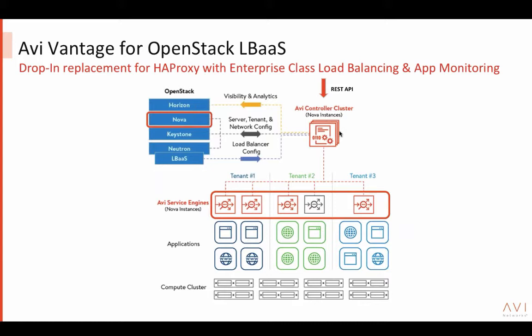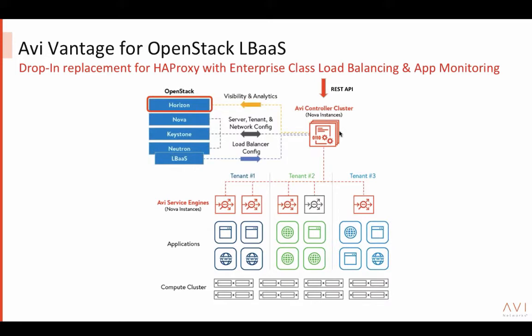Once service engines are spun up automatically by AVI controller, it talks to Neutron to plumb them in the right network, ensuring load balancing policies can reach the pool of servers and configure VIPs appropriately — all network plumbing done automatically. As traffic grows or shrinks or as you deploy more tenants or workloads, it talks to Nova again to spin up additional resources on demand, just like Amazon ELB. With the Horizon integration, you can see application performance, monitoring, and analytics directly in Horizon.